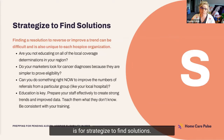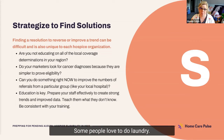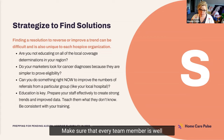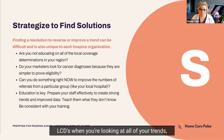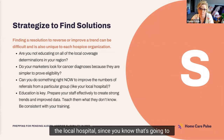S is for strategize to find solutions. Everyone's solutions will be different because not everyone has the same problems. The ways to resolve, reverse, or improve a trend are going to be unique for your organization. Make sure that every team member is well-versed in the hospice benefit and your region's LCDs. When you're looking at all of your trends, think of what you can do right now to improve some of these referral sources, such as from the local hospital, since you know that's going to be a focus with hospital encounters in the audit.